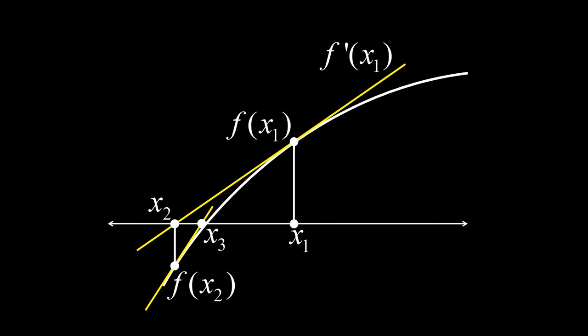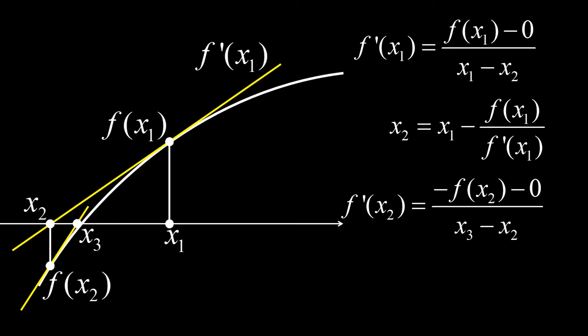Ang intersection ng tangent line at x-axis ay makukuha mula sa equation for the derivative as the slope of the tangent line. Therefore, xn plus 1 equals xn minus f of xn divided by f' of xn.